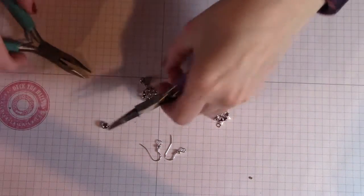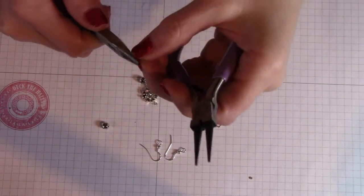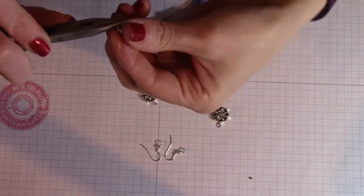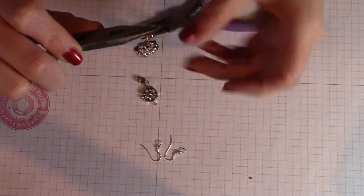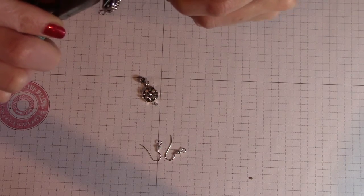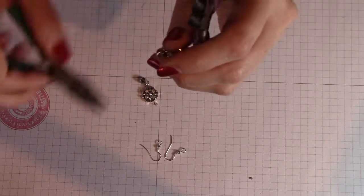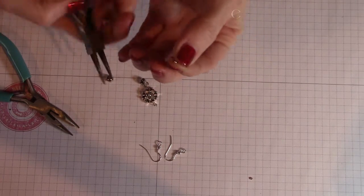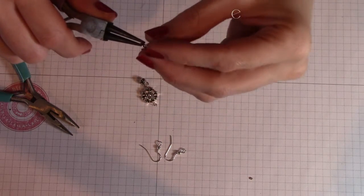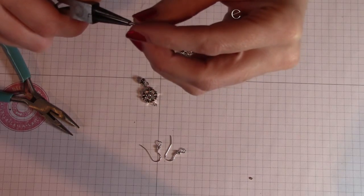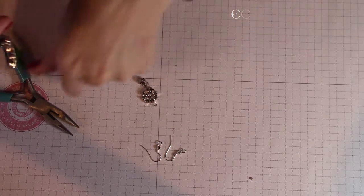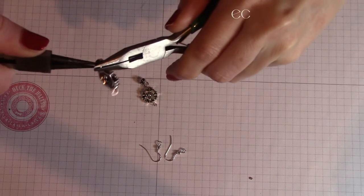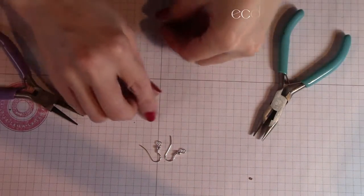And now we're going to do the same thing with the other one. Oh no! It fell off! This is what happens when you think you have it all together, but you don't. Try that again. There we go. Now it's securely on there.